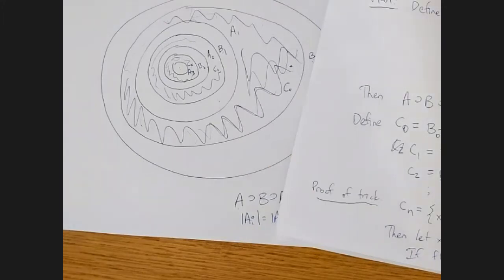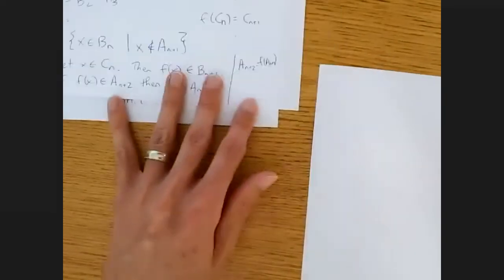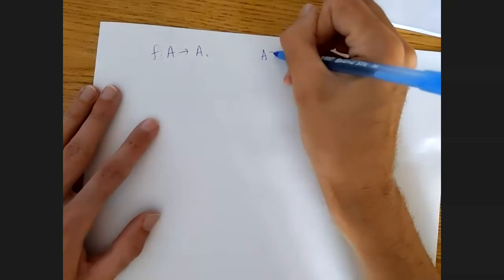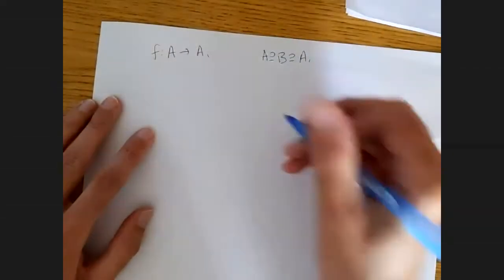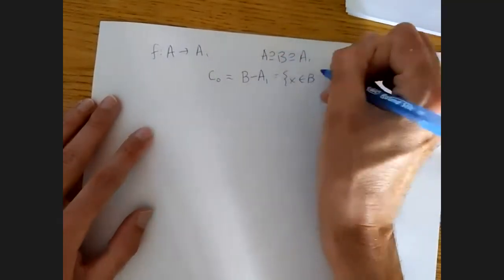So let me try and summarize our situation. We have a function f from a to a1. We have a sitting, b sitting inside a, and a1 sits inside b. And we put c0 to just b minus a1, in other words, the elements of b that are not in a1.